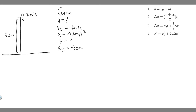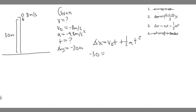Now we've got all the variables. Let's look at which equation to use. We need one that contains T, and since we don't have the final velocity V, we use: delta x equals V sub zero times t plus one half a t squared. Plugging in: minus 30 equals minus 8 times t plus one half times minus 9.8 times t squared.